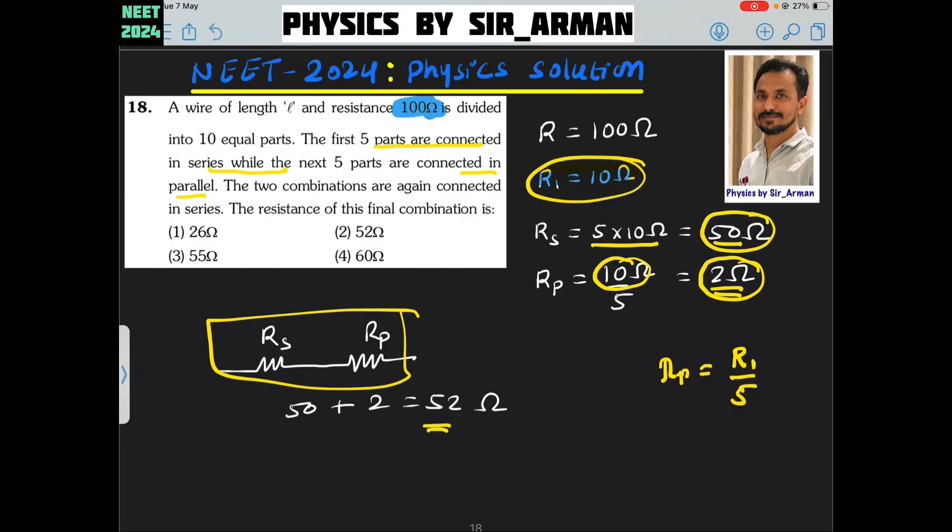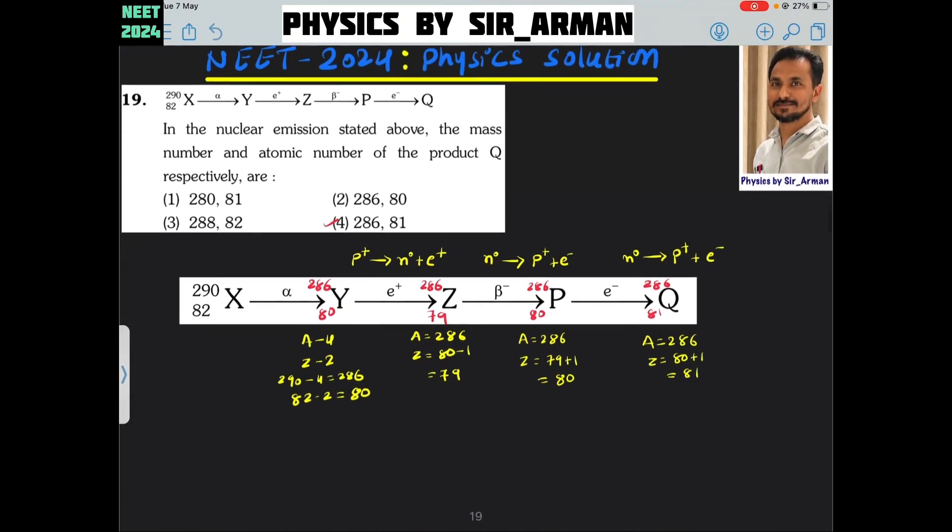So the total resistance will be 50 plus 2, again it is a series combination. So it becomes 52 ohm.